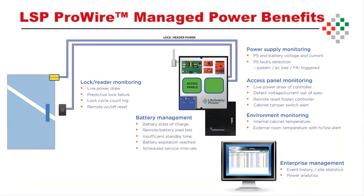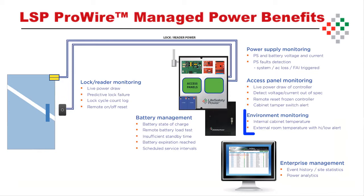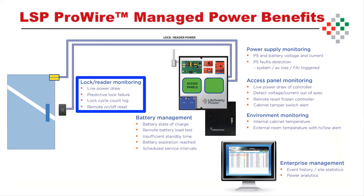More than just a power supply, LSP provides key information on system health in every area. The power source may be continually monitored for voltage, current, and fault condition. The access boards may be monitored for live and historical power draw, applied voltage and current values, tamper switch condition, and may be remotely reset. External room temperature and internal enclosure temperature are monitored for operation within user-defined limits, and partial or complete coil failures within the lock are detected immediately.